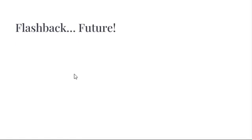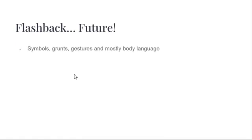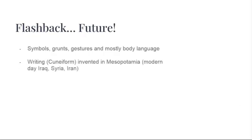Before words were ever invented and used, people communicated through symbols, grunts, gestures, and mostly body language. Then, as time went by, humans were able to form verbs. And then, in 3500–3000 BCE, the cuneiform system of writing was developed by the Sumerians in Mesopotamia.